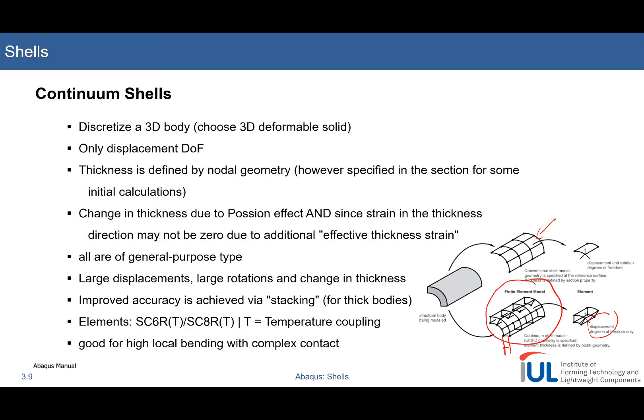So it is one example I talked about, contact and boundary conditions before, and one thing you can definitely tell is that the continuum shells have an advantage when it comes to complex contact conditions, which reflects the nature of these elements, which is linked to the solid elements, because usually solid elements, as I said before, perform a little bit better in contact problems than shell elements.